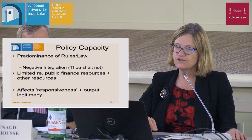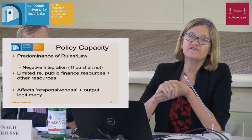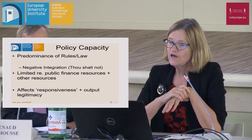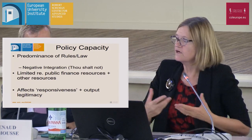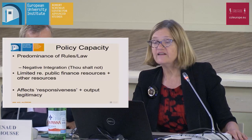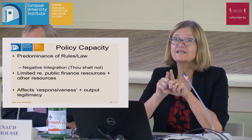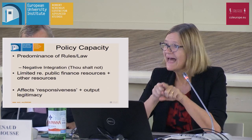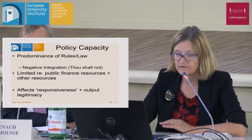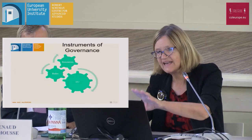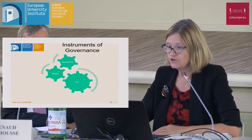In terms of the resources of public power, any national government in Europe is spending between 36 and 50% of the gross national income of the country, whereas the EU is still a 1% budget. So what we've come to think of as governing power, the EU has very thin financial capacity. That affects both its output legitimacy and its capacity to respond — what it can do in response to problems on the ground. We saw this very forcibly during the financial crisis. In sum, the EU's capacity is, in public finance terms, much weaker than in rules.